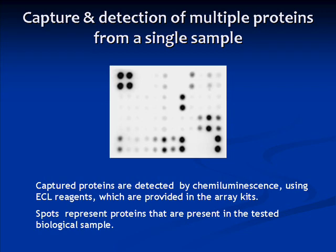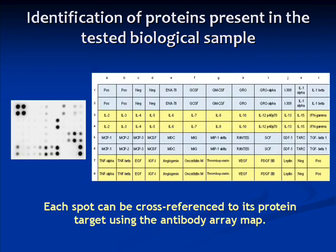Furthermore, the darkness of each spot is directly proportional to the abundance of that cytokine. To identify which cytokines are represented by the visible spots, the array result must be compared to an array map. This table is an example of an antibody array map. Each spot cross-references a particular map location, thus identifying the protein detected.